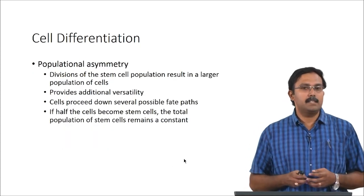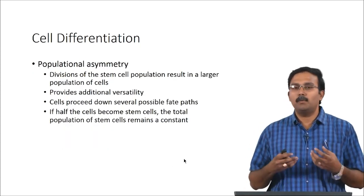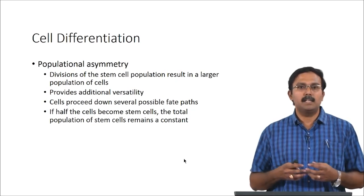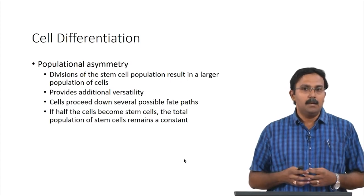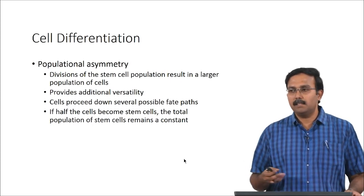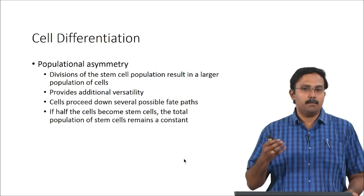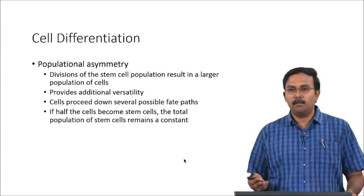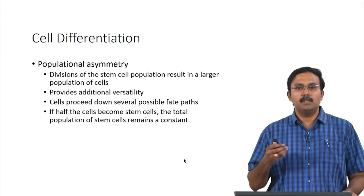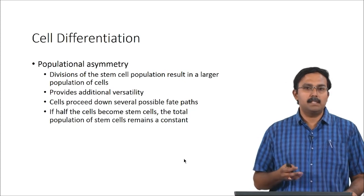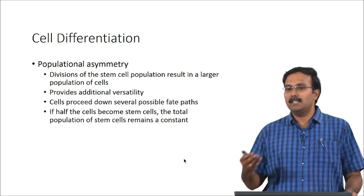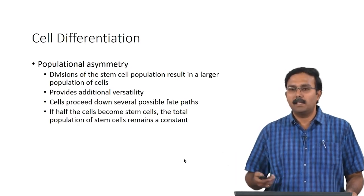During cell differentiation you would experience something called population asymmetry. Divisions of the stem cell population result in a large number of cells which can actually form different types of cells, providing additional versatility. Cells can proceed down several possible fates depending on the environment they are in. If half the cells become stem cells, the total population of stem cells remains constant — that way the self-renewing property of the stem cells is taken care of.